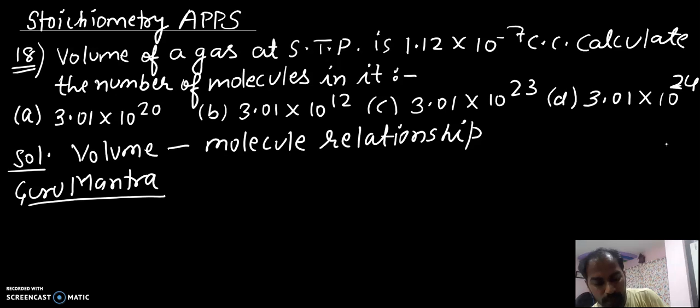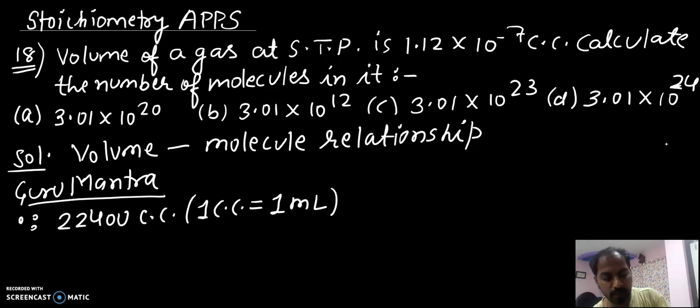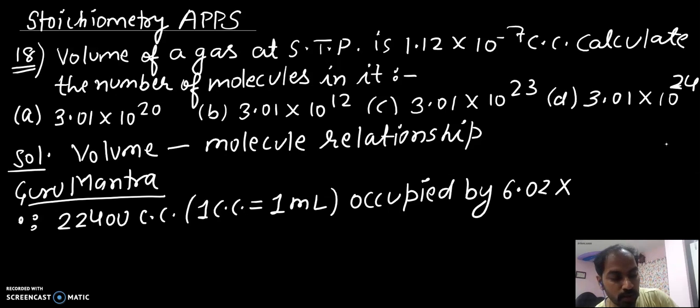We know that 22,400 cubic centimeter, one cubic centimeter is 1 milliliter, occupied by 6.02 × 10^23 molecules at STP.